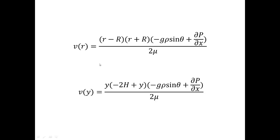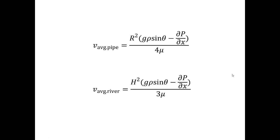If you want to know the average velocity inside the pipe or inside the river, all you have to do is take each individual velocity at all possible radii or heights and divide that sum by the area that you integrated over — it's just integrating and dividing. Mathematica gave me this result. You can see that the average velocity increases if you increase the density of the fluid or if you increase the inclination of the pipe or the slope of the river to the horizontal. Also, if you increase the negative pressure gradient, the velocity increases.